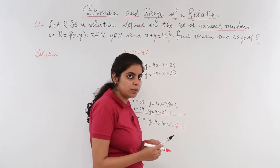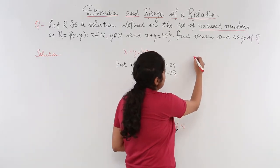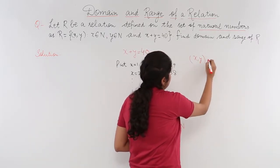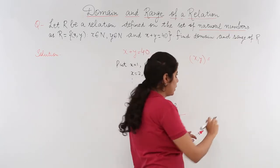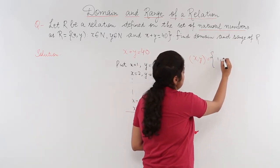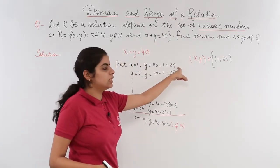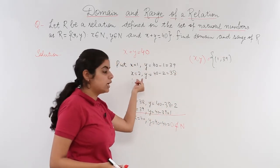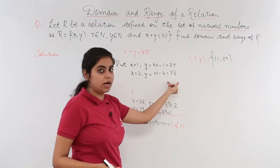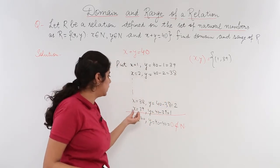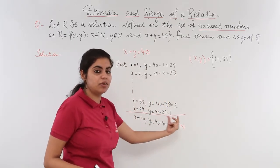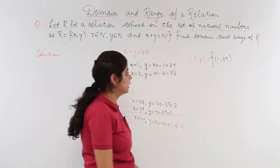Let's write it in ordered pair form. So I have (x,y) equal to what? Let's see. It can be 1, then 39. 1 is my x, 39 is my y. Similarly, when x is 2, y is 38. Similarly, when x is 39, y is 1. And so on, we can move further.